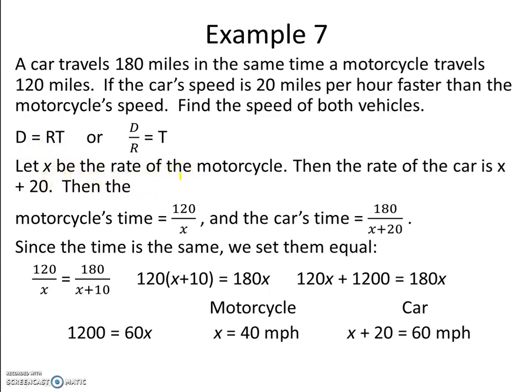Then the rate of the car is x plus 20. The motorcycle's time would be 120 divided by x, and the car's time would be 180 divided by x plus 20. Since the time is the same, we set them equal.